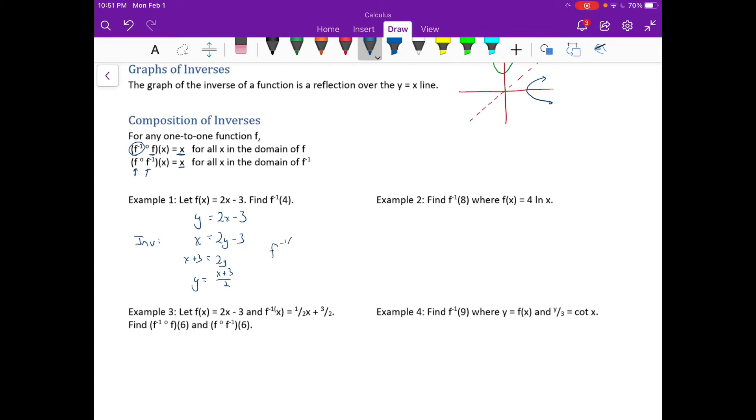So our inverse is x plus 3 over 2. We could write it as our inverse is x plus 3 over 2. And we can plug in 4 like the problem asked. We can plug in 4. 4 plus 3 over 2 is 7 halves. So that is the value of the inverse. I forgot the negative. The inverse of f at 4.